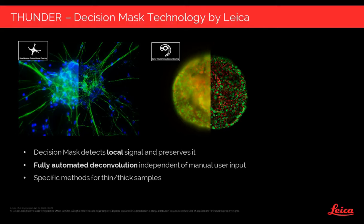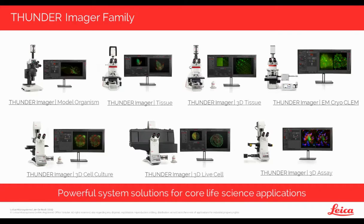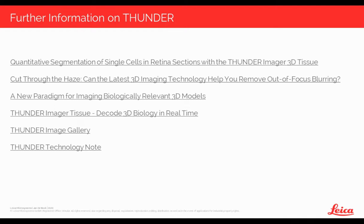The Thunder Imager CryoCLEM is part of a whole family of Thunder Imagers, providing powerful system solutions for any core life science application. For example, there is the Thunder Imager for model organisms, a dedicated system for tissue slices, for 3D tissue and 3D cell culture such as spheroids, and for more assay-based applications. The Thunder Imager CryoCLEM serves your needs in the cryo and EM-related field. Further information on Thunder is available through links to a technology note and an image gallery showing many examples of how Thunder improves image quality.